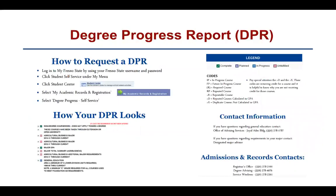Degree Progress Report, known as DPR. So what is the Degree Progress Report? The DPR shows a student's progress in a chosen degree program using courses taken at Fresno State and at transfer institutions. The report displays how courses apply toward the student's declared major, general education, degree requirements, and displays a list of approved courses for each remaining requirement.